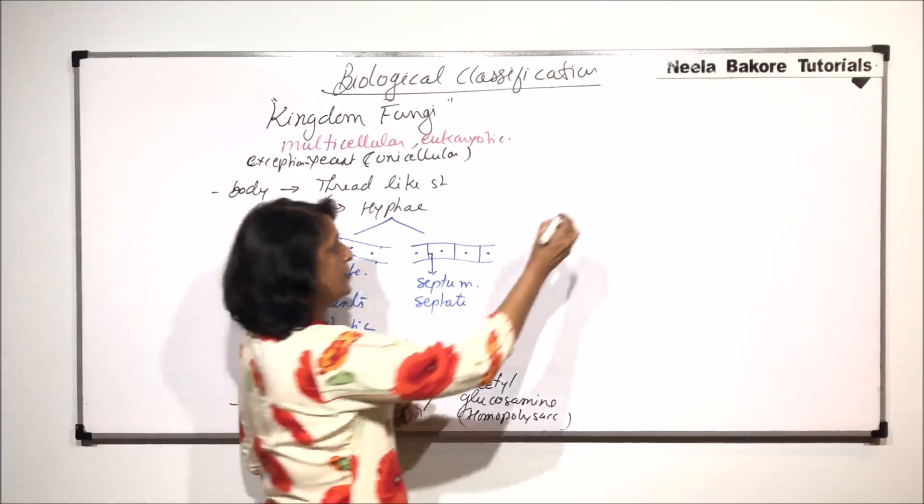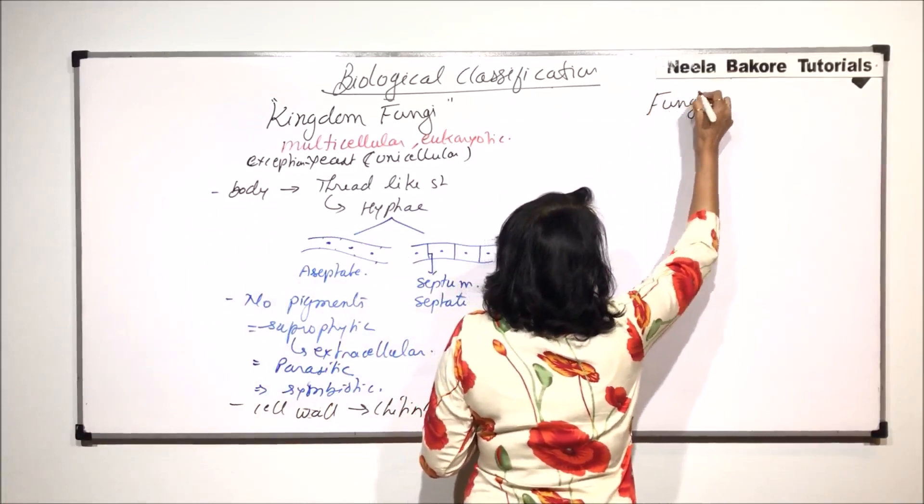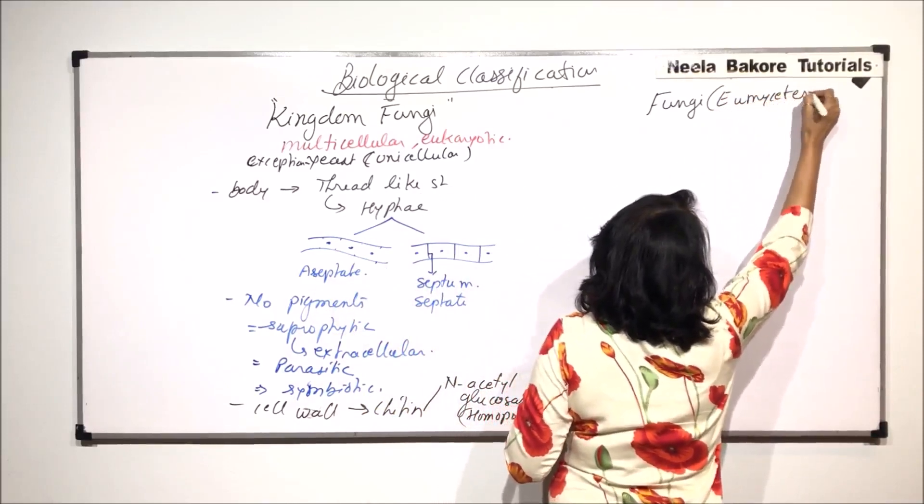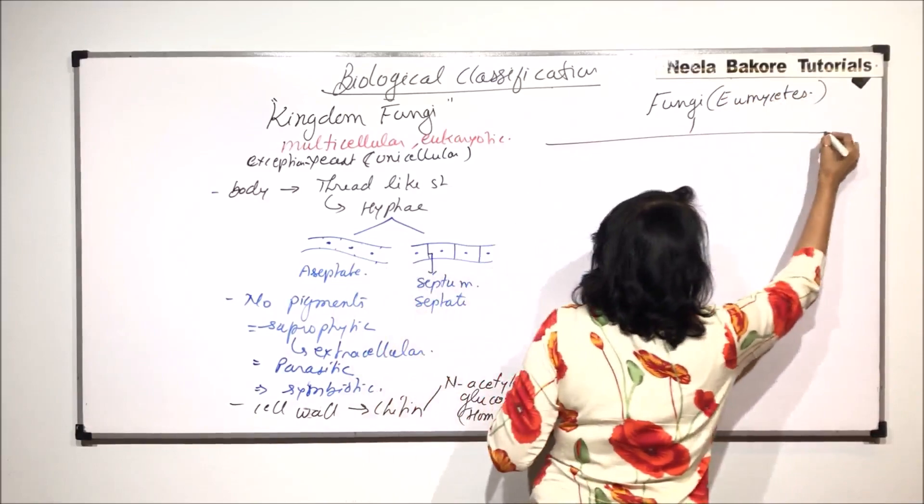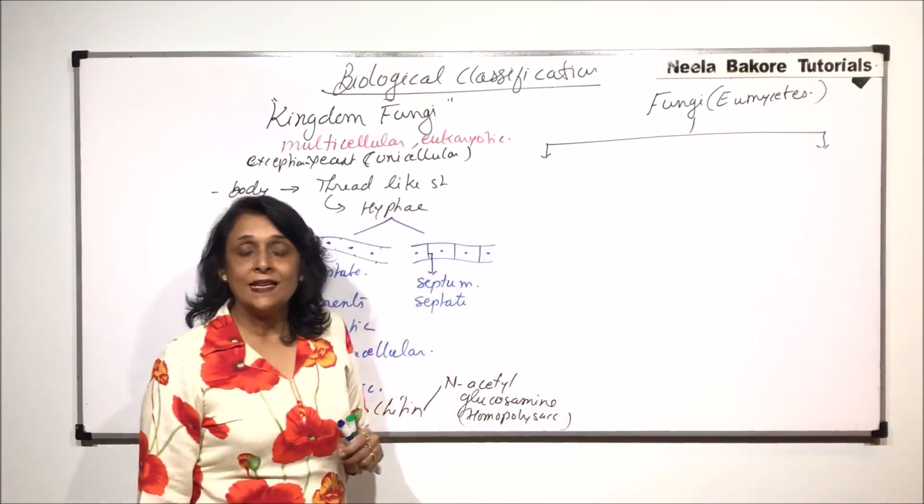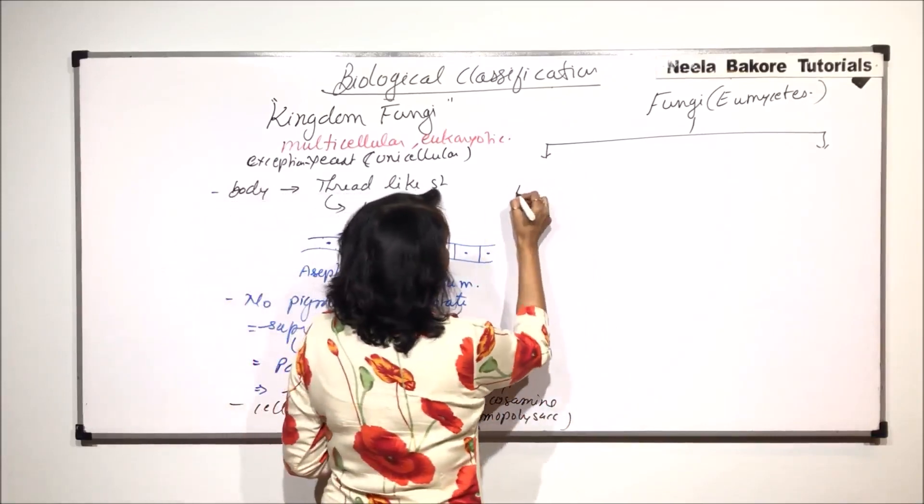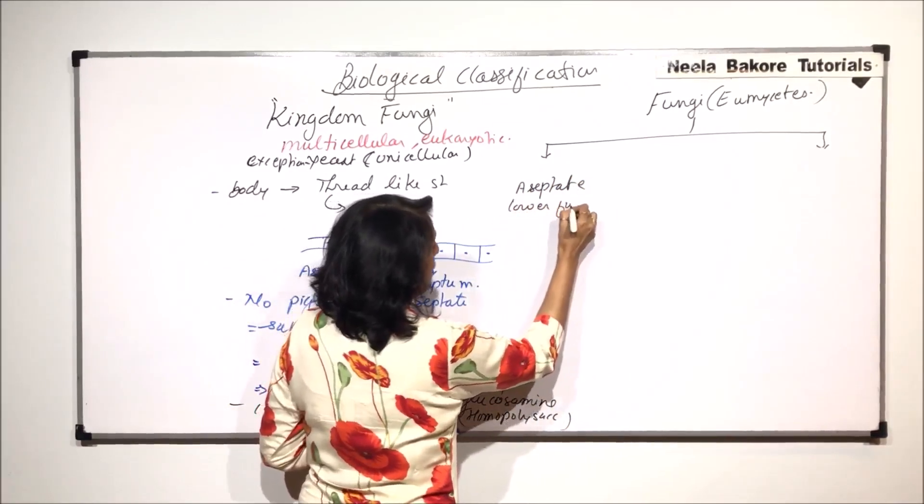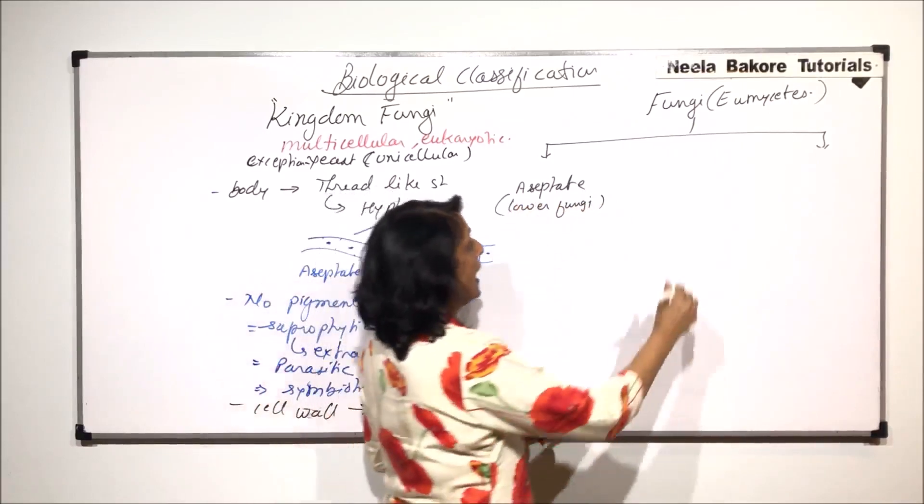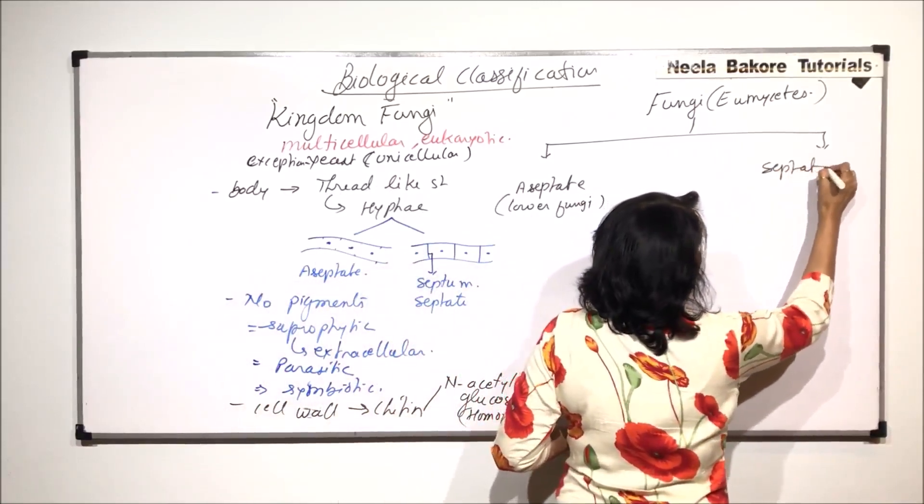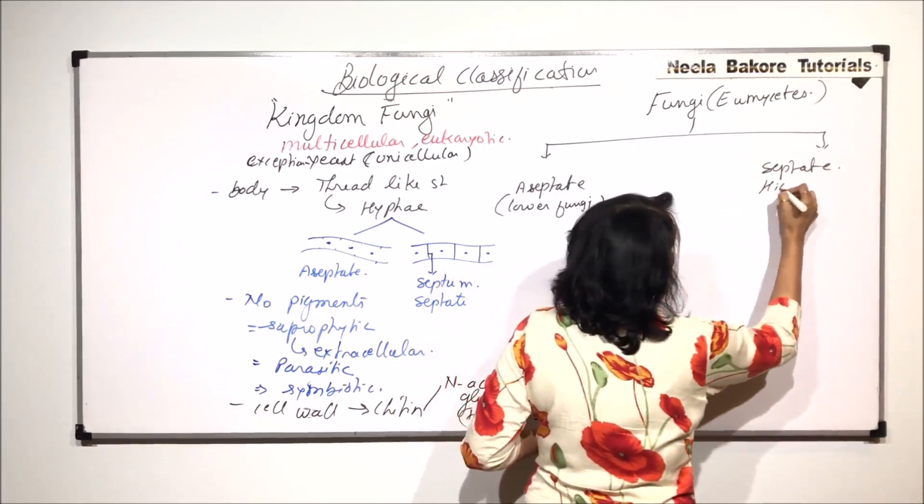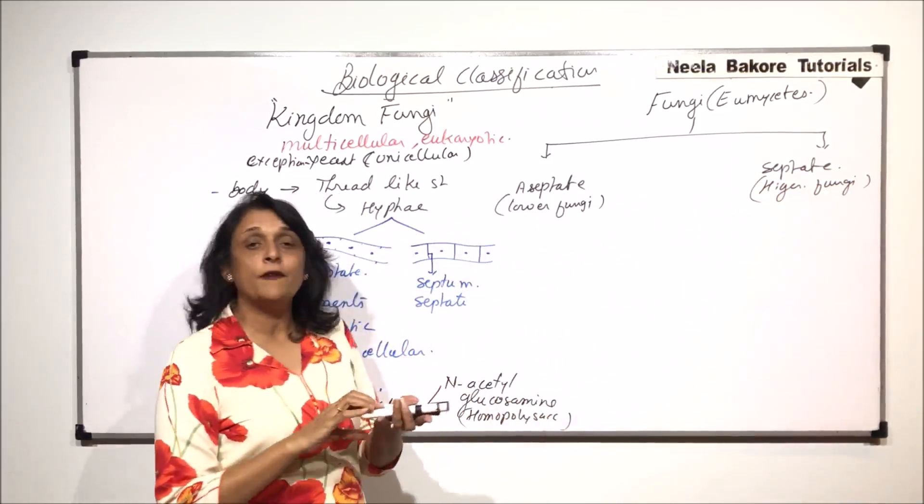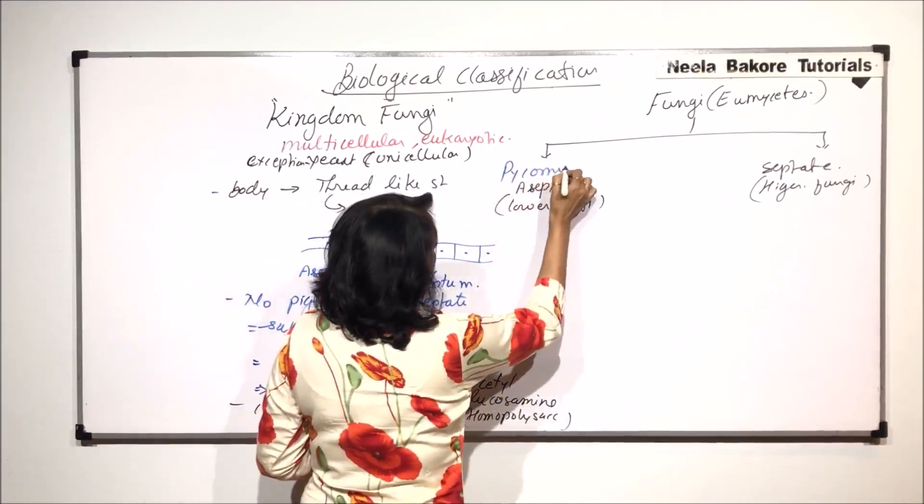When we talk of fungi, we are actually talking about the true fungi which are known as eomycetes. And this group is divided into two categories on the basis of presence and absence of septa. So if it is aseptate, then it is considered as lower group, these are lower fungi. And if they are septate, then this group is considered of higher fungi. So this is the first classification. The lower fungi group is known as phycomycetes.